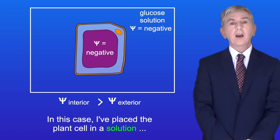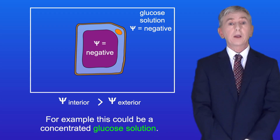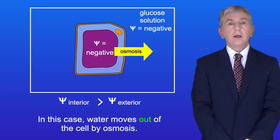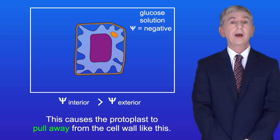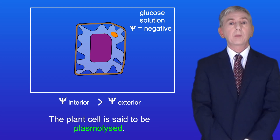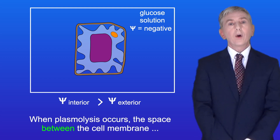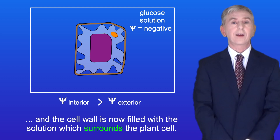Now the plant cell is placed in a solution which has a lower water potential than inside the plant cell — for example a concentrated glucose solution. In this case water moves out of the cell by osmosis, causing the protoplast to pull away from the cell wall. Scientists call this plasmolysis and the plant cell is said to be plasmolyzed. When plasmolysis occurs, the space between the cell membrane and the cell wall is filled with the solution surrounding the plant cell.